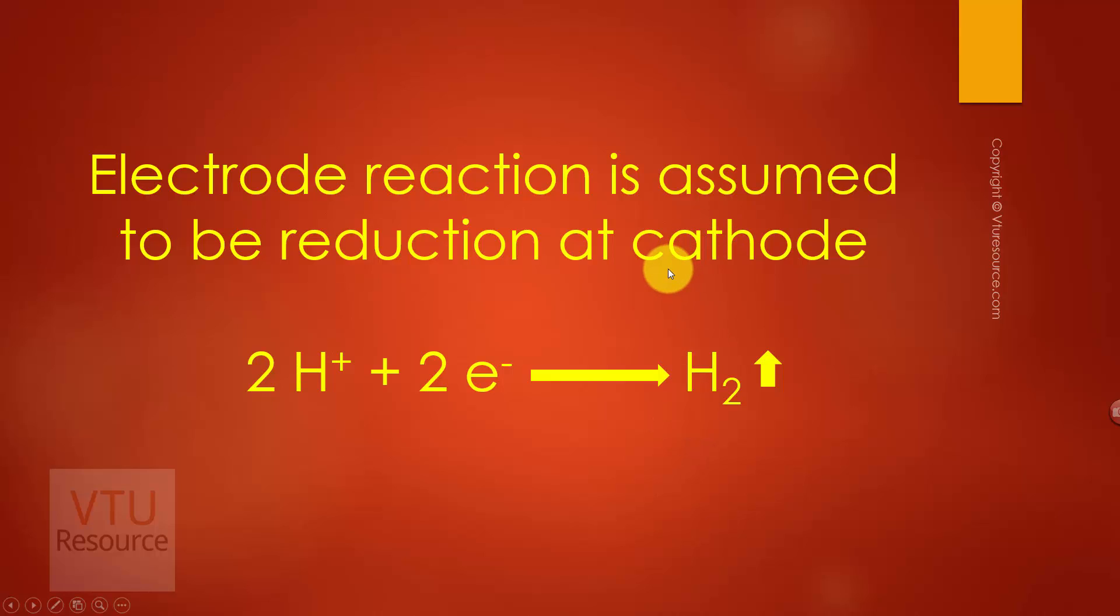Since the calomel electrode acts as the cathode, a reduction reaction occurs at the cathode. The acidic solution of unknown pH contains H+ ions. The electrode reaction assumed is reduction at the cathode: 2H+ + 2e- gives hydrogen gas.